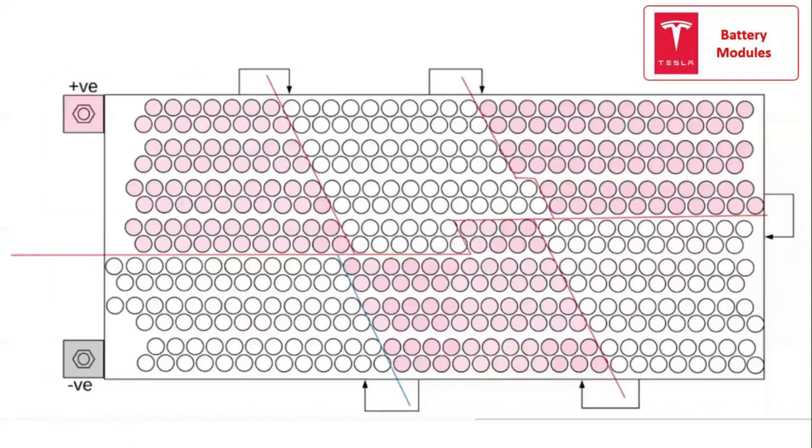The cells are arranged with the positive or negative terminals facing up in a specific pattern to achieve the desired voltage and capacity for the battery module. The red cells indicate cells whose positive terminals are facing up and the white cells indicate cells whose negative terminals are facing up.